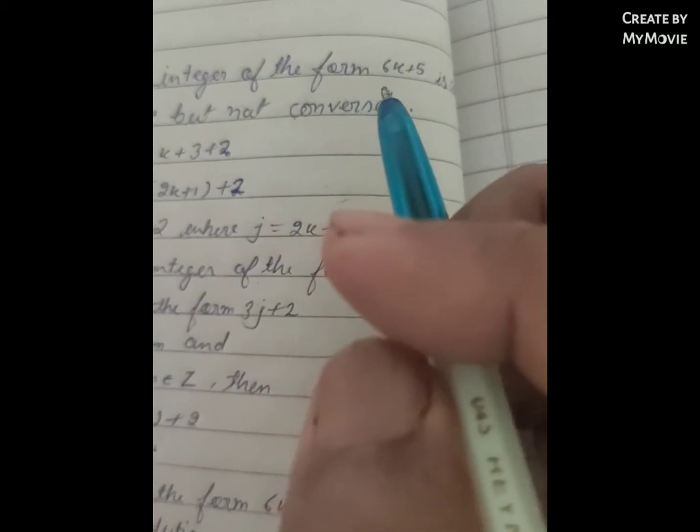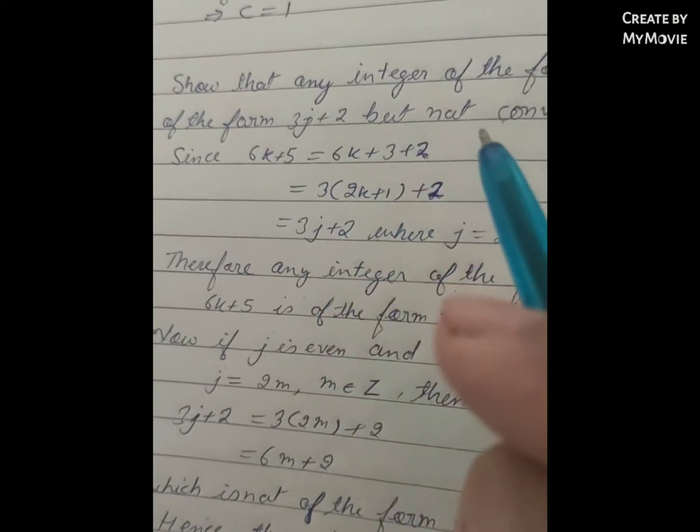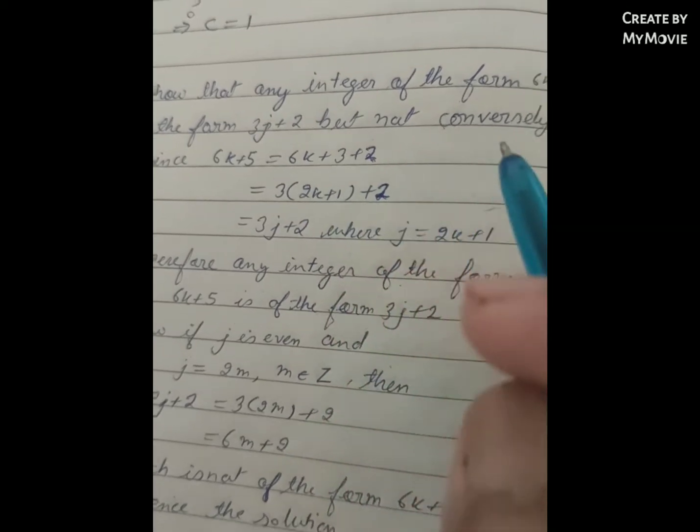Hence we have proved that 6k plus 5 is of the form 3j plus 2, but conversely it is not possible.